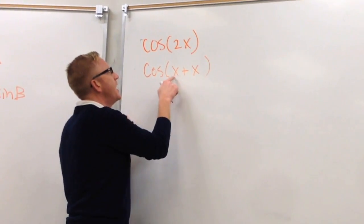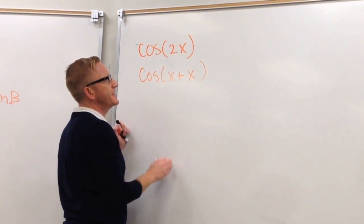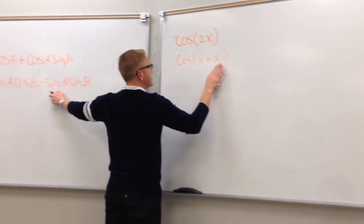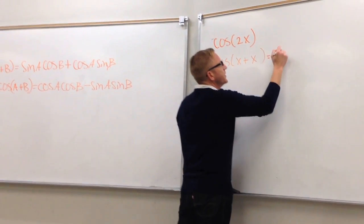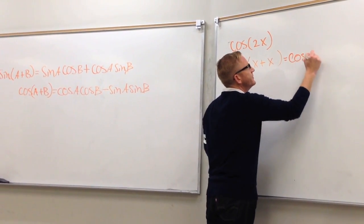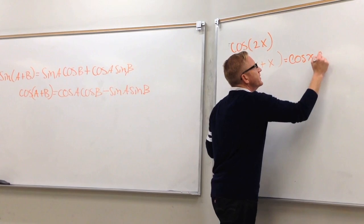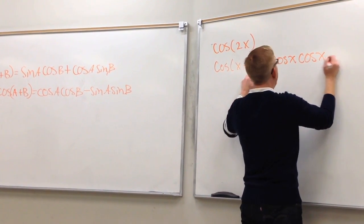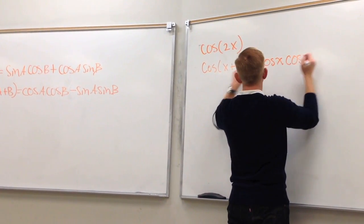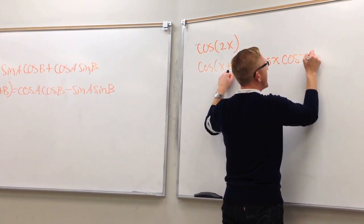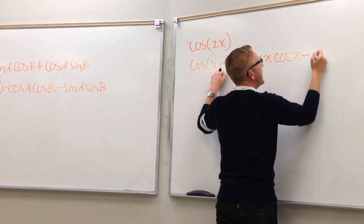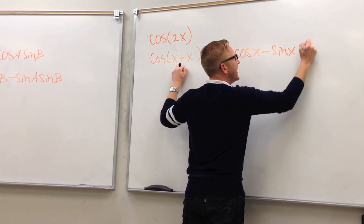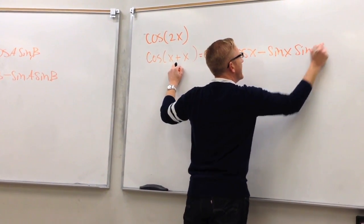Everywhere I see an a, I'm going to put an x. Everywhere I see a b, I'm going to put an x. So this is the cosine of x times the cosine of x, and then the sines are opposite: minus the sine of x times the sine of x.